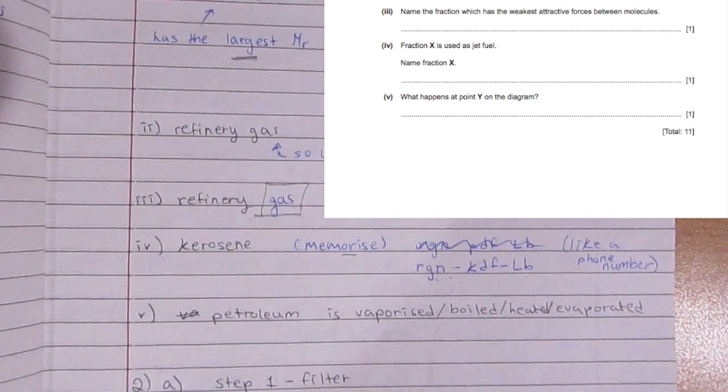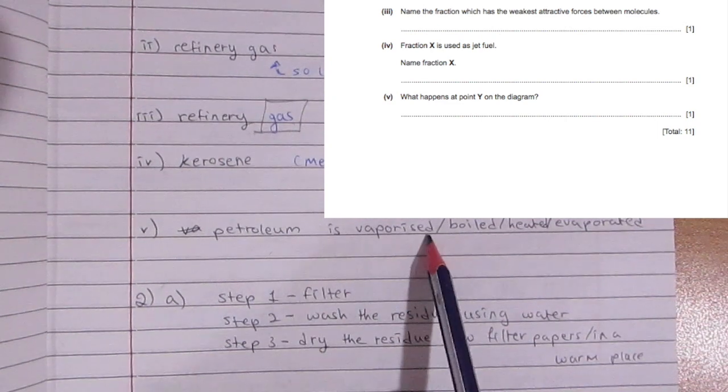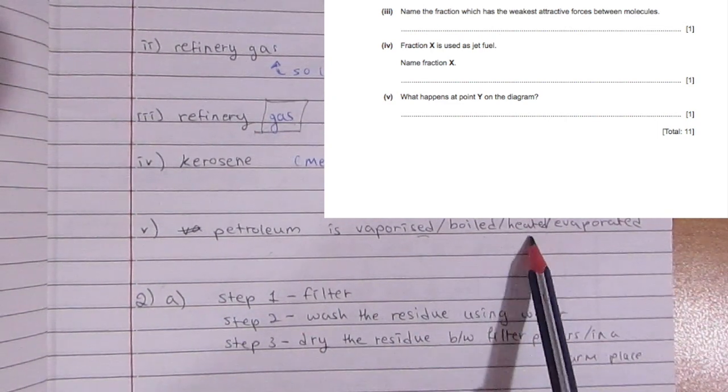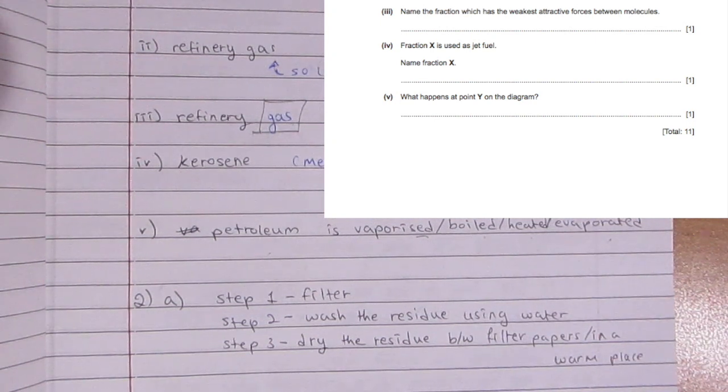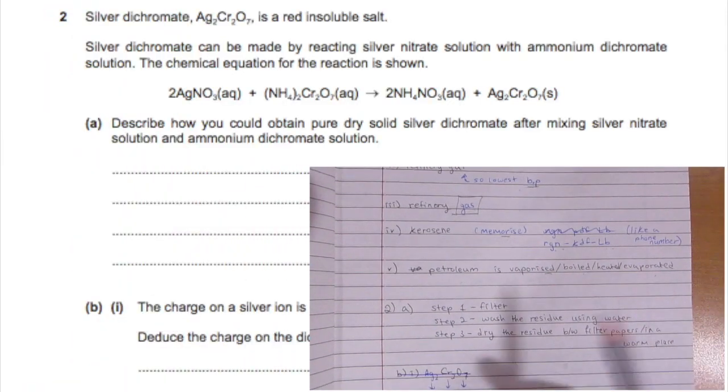The fraction used for jet fuel is kerosene. You need to memorize it, and you can memorize it like a phone number: R-G-N-K-D-F-L-B. Petroleum in part Y is either vaporized, boiled, heated, or evaporated.